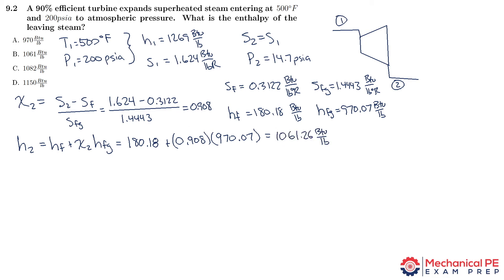Now we're ready to apply the turbine efficiency of 90%. The efficiency equals (h1 minus h2 actual) divided by (h1 minus h2 ideal), where the numerator is h1 minus h2 actual and the denominator is h1 minus h2 ideal. The accent mark on top represents actual.